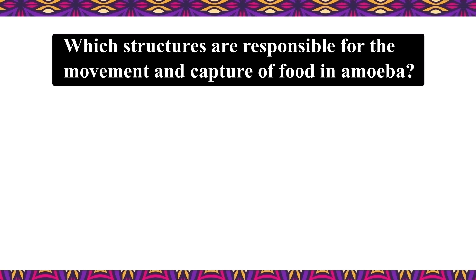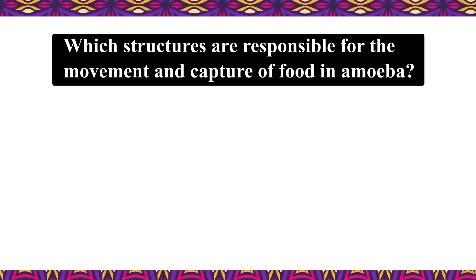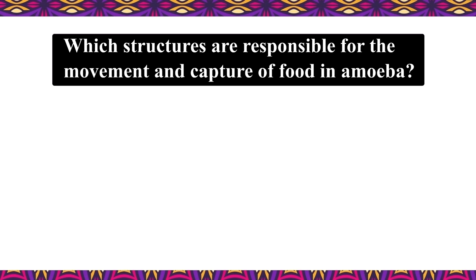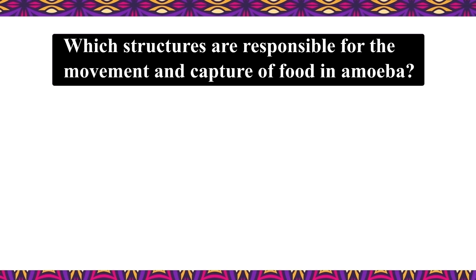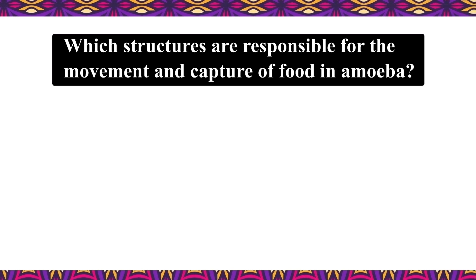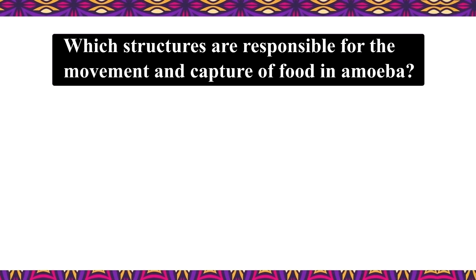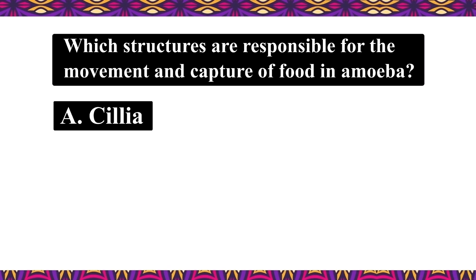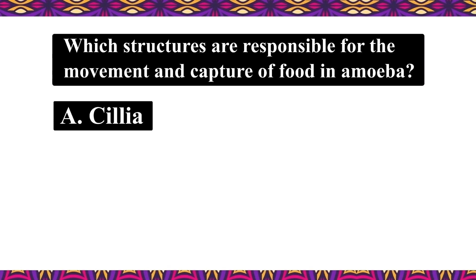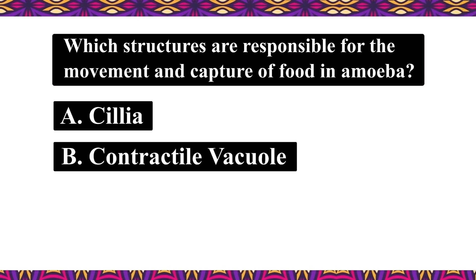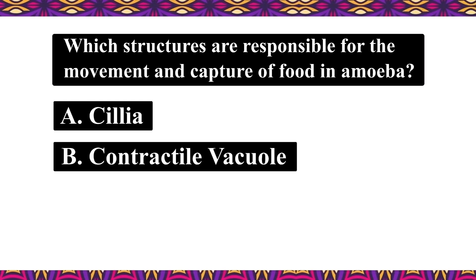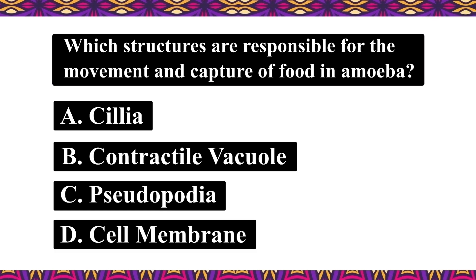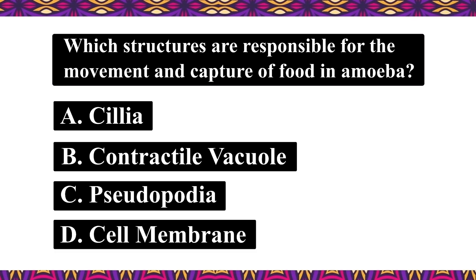Find out the answer to this question at the end of the video. Question: Which structures are responsible for the movement and capture of food in amoeba? A. Cilia. B. Contractile vacuole. C. Pseudopodia. D. Cell membrane.